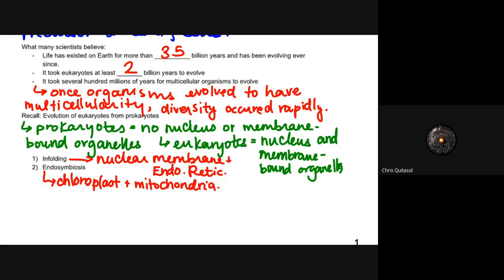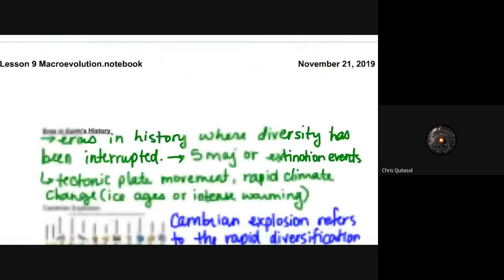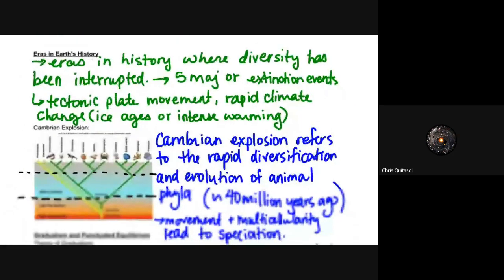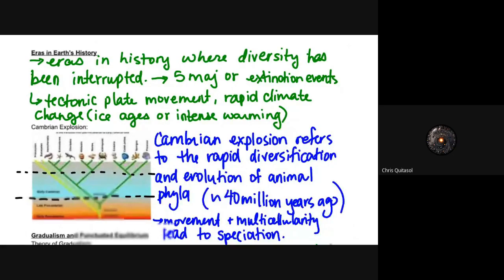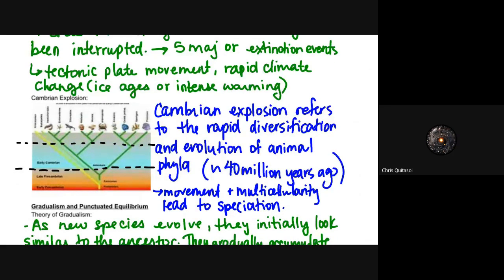There are many eras in Earth's history that help provide evidence and topics of study and discussion for us. One main thing to keep in mind here is that the eras in history where diversity has been interrupted have been the result of major extinction events. The boom as a result of those major extinction events is a very interesting, fascinating topic to discuss. These tectonic plate movements, rapid climate changes, ice ages, intense warming, and asteroids from extra solar activity—all of those are major extinction events that allow for that diversity to kind of follow afterwards.